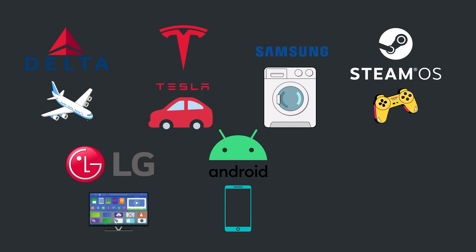SteamOS is built on the Linux kernel. LG uses Linux in their TVs. And Android was built from Linux. And basically the entire internet is running on Linux-based operating systems.